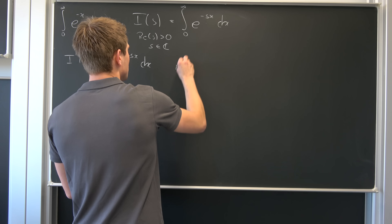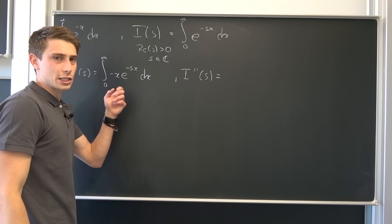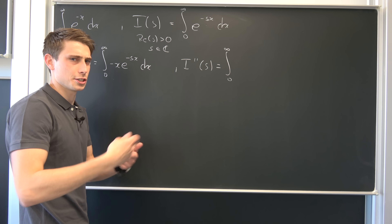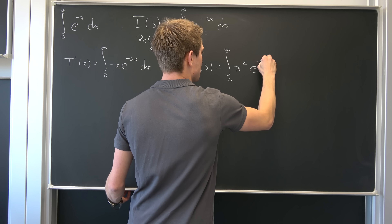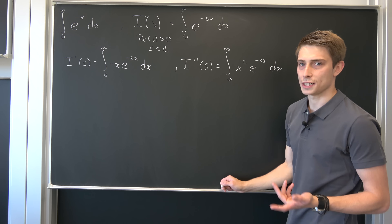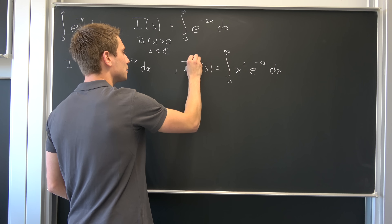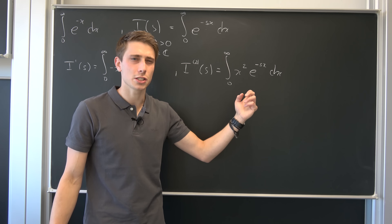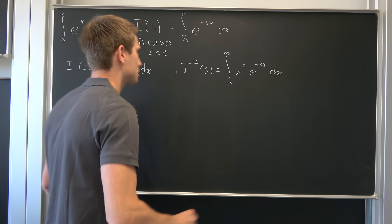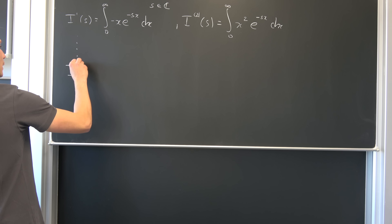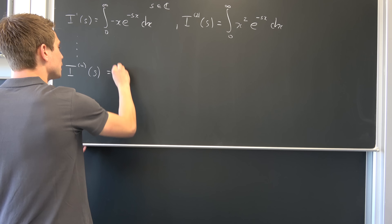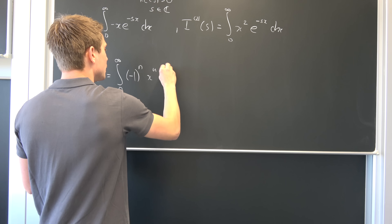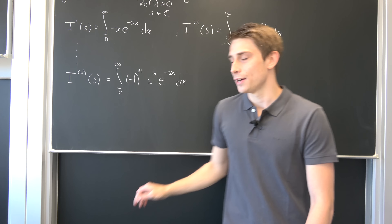What's the next one going to be? I double prime of s — same special Leibniz rule. We end up with the integral from 0 to infinity of minus 1 squared, which is just 1, times x squared times e to the minus s times x dx. You can continue this process, and you can see that for the nth derivative we get minus 1 to the nth power times x to the nth power times e to the minus s times x, all integrated from 0 to infinity.